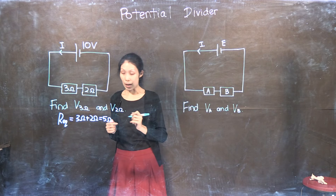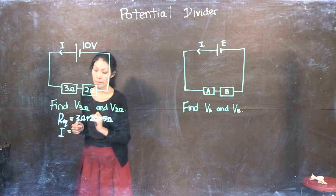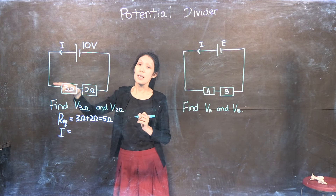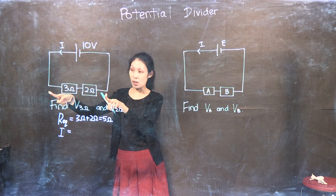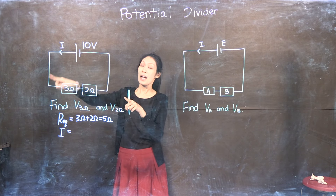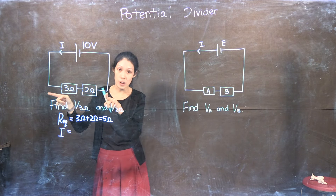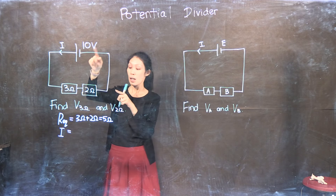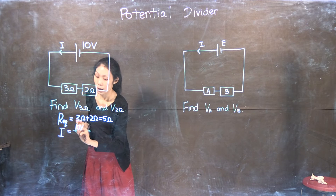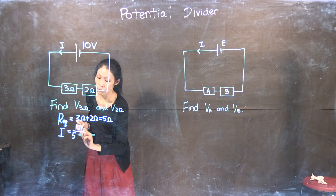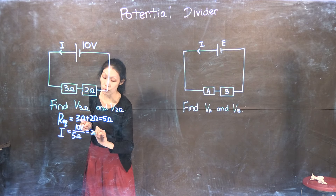Now I think we can find the current I through the circuit. This current is found using the potential difference across these two resistances divided by the equivalent resistance. The potential difference across these two resistances is also the EMF of the source, so I divide by the equivalent resistance — five ohms — and I get two amperes.